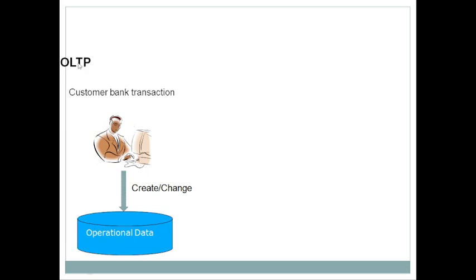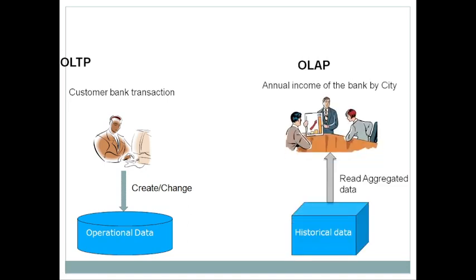This is what we call an OLTP system — only for daily transactions. In this OLTP system, we store only a limited period of data, such as the last one year of customer data. An OLAP system, on the other hand, is used to analyze historical data.